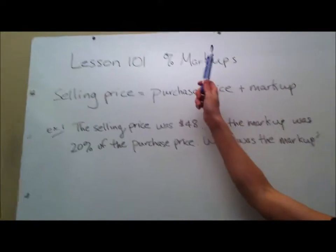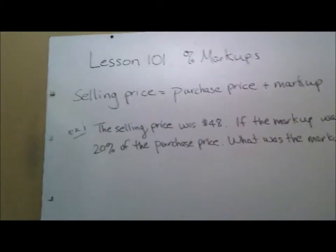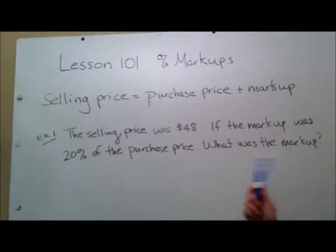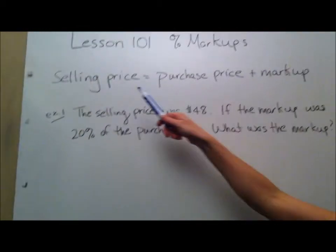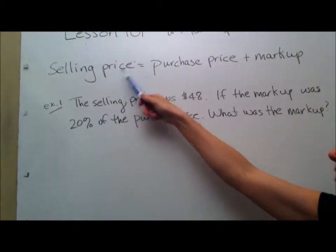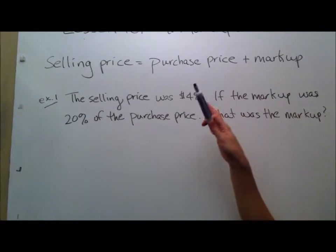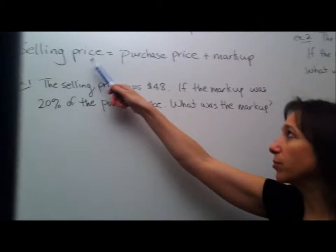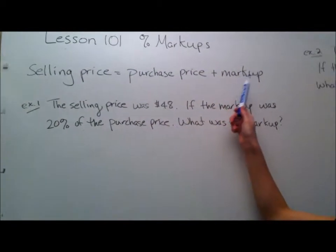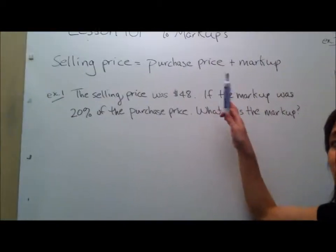Alright, we're doing less than 101% markups. Even though these are going to be word problems, they're really easy word problems because we're going to just use this formula: Selling price equals purchase price plus the markup. So we're just going to read through the problems and see what the selling price is, what the purchase price, and what the markup is. And one of these will be missing and we'll have to find it.